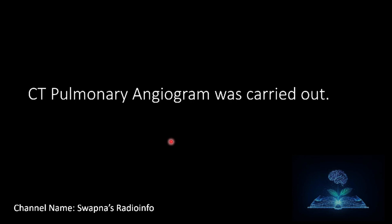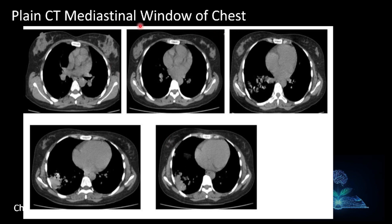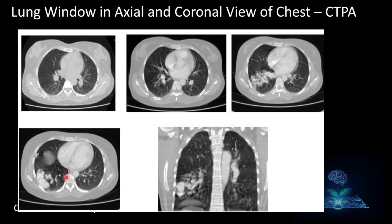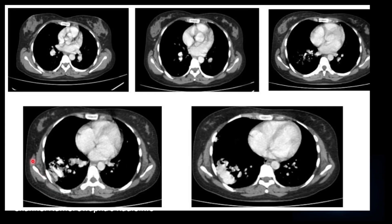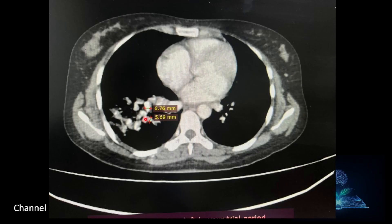CT pulmonary angiogram was then carried out. The plain CT in the mediastinal window shows soft tissue opacity in the right lower lobe in a subpleural location. The lung window in both axial and coronal views clearly shows the lesion. On CT pulmonary angiogram, an intensely enhancing vascular nidus is seen in the right lower lobe, along with the dilated inferior pulmonary vein and two arterial feeders measuring 6 mm and 5 mm.